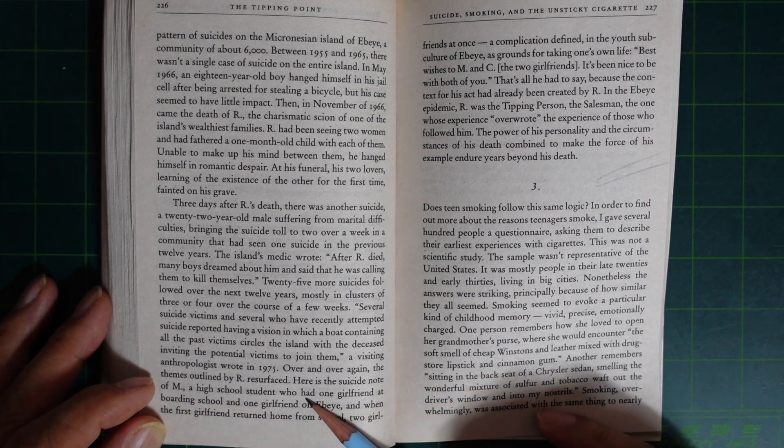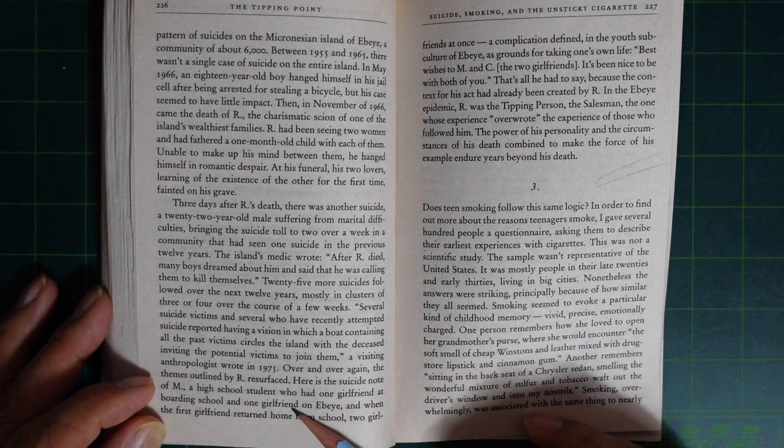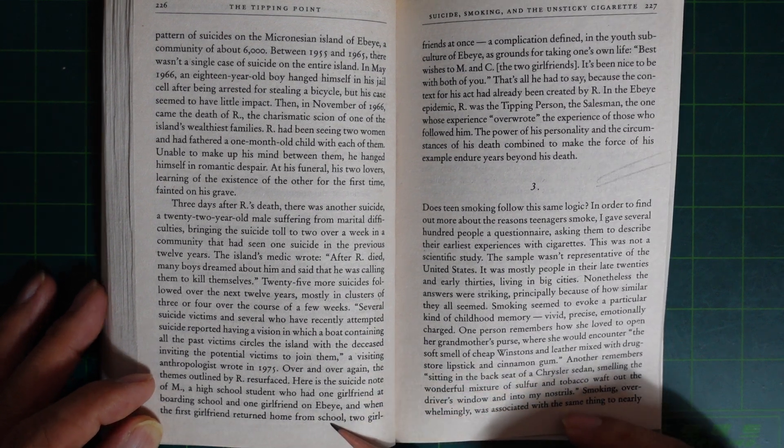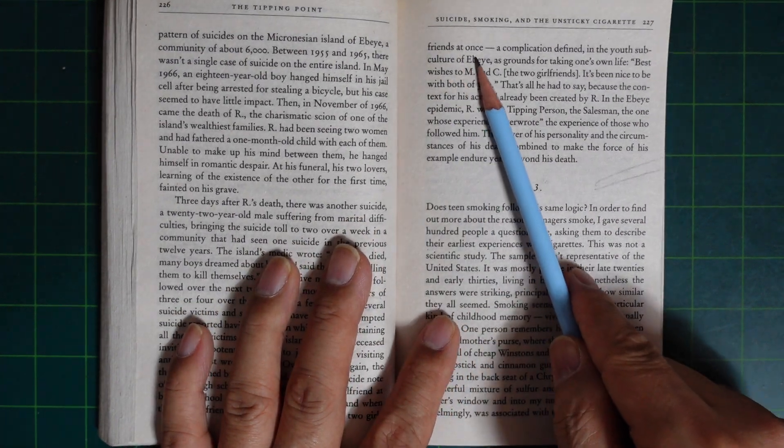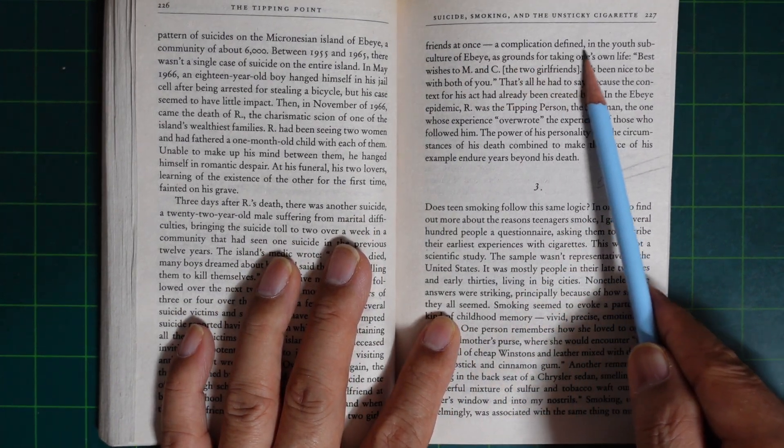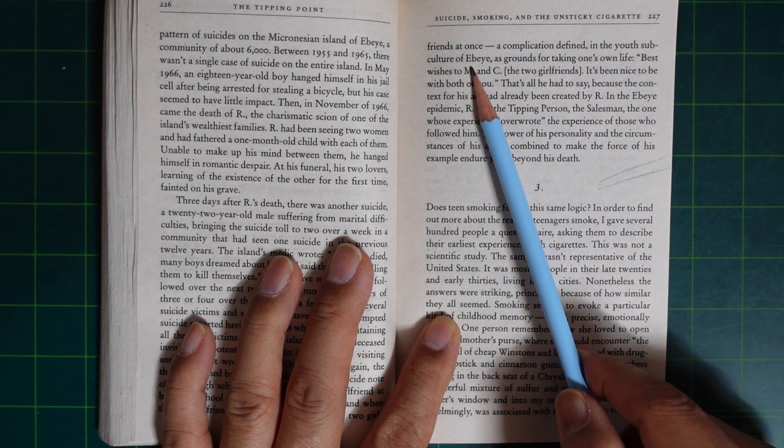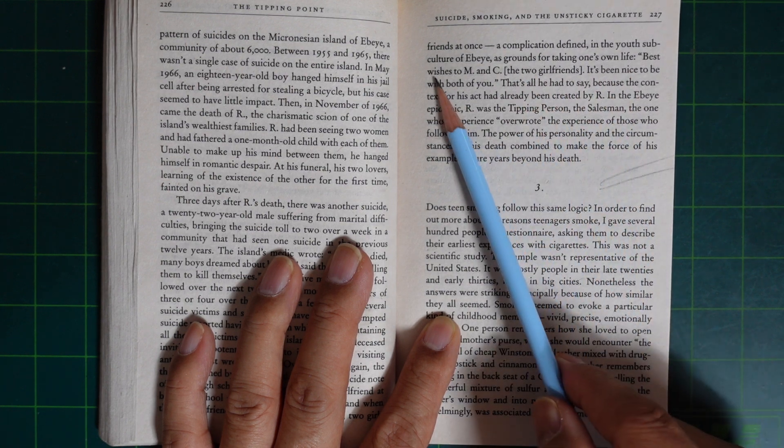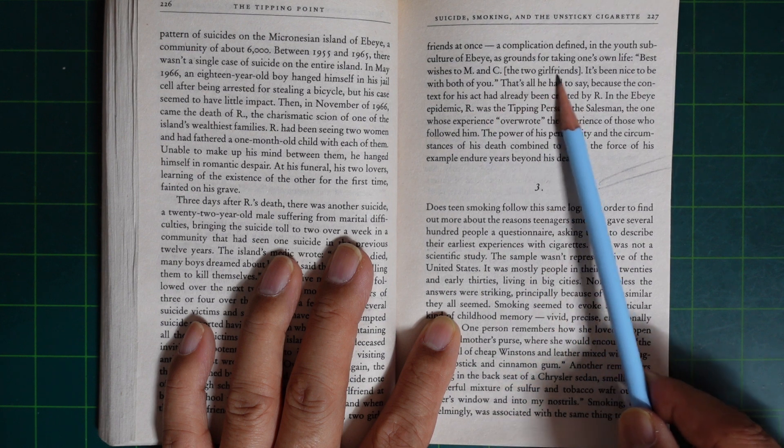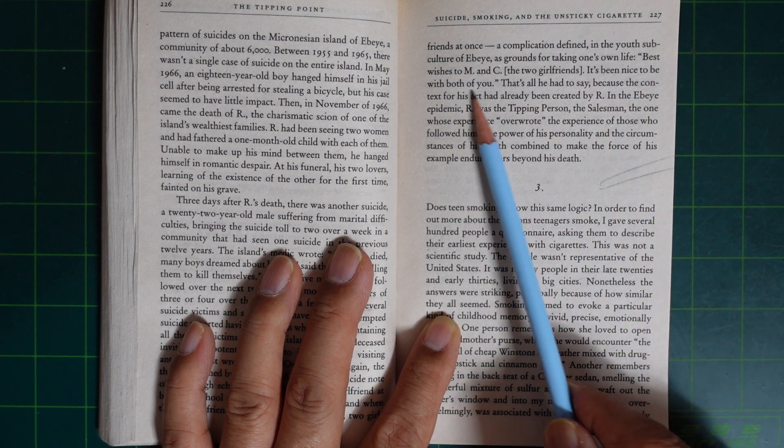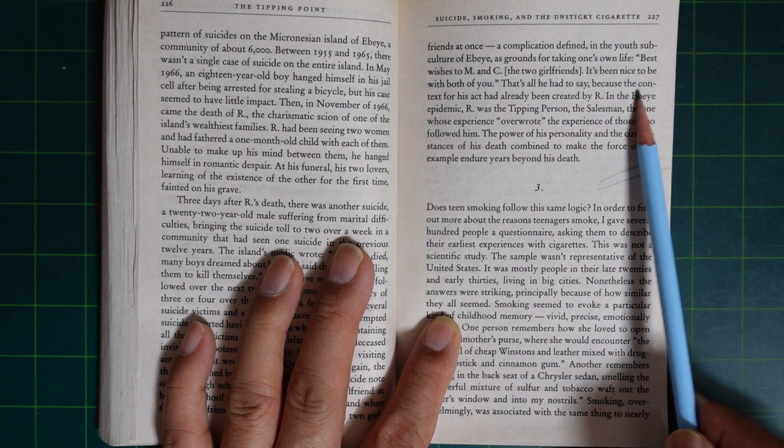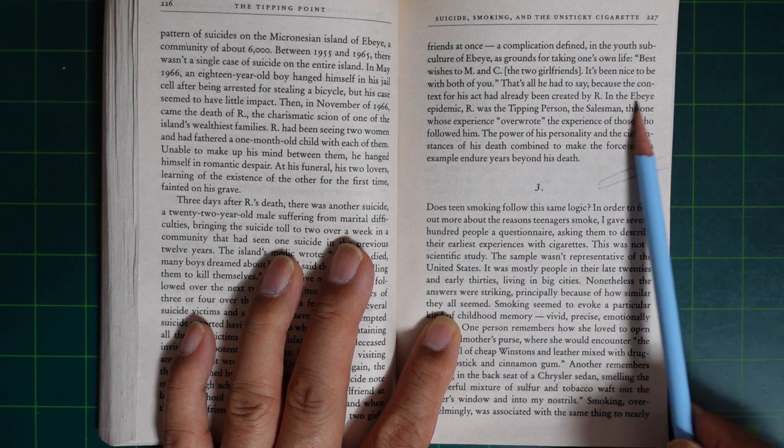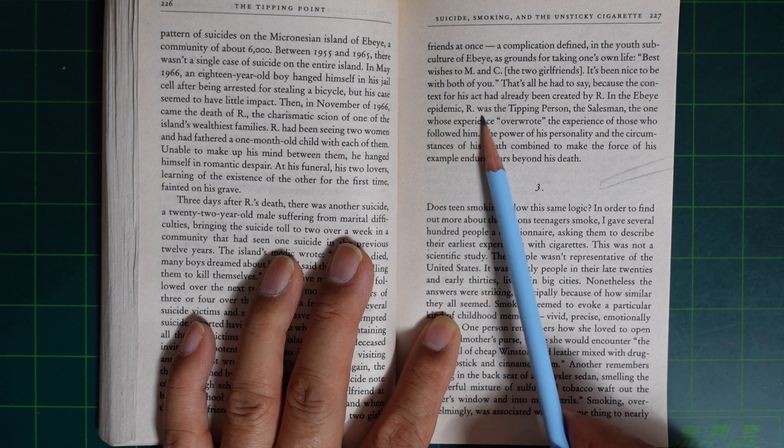M had one girlfriend at boarding school and one girlfriend on Ebeye, and when the first girlfriend returned home from school, two girlfriends at once. A complication defined in the youth subculture of Ebeye as grounds for taking one's own life. Best wishes to M and C, the two girlfriends. It's been nice to be with both of you. That's all he had to say, because the context of his act had already been created by R. In the Ebeye epidemic, R was the tipping person.